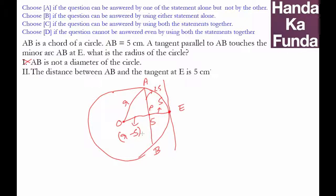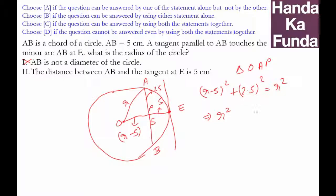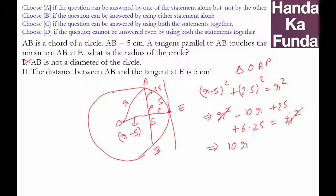Can I figure out something from here? Using right triangle OAP, I get: (R − 5)² + (2.5)² = R². This expands to R² − 10R + 25 + 6.25 = R². The R² terms cancel, giving 10R = 31.25, so R = 3.125.